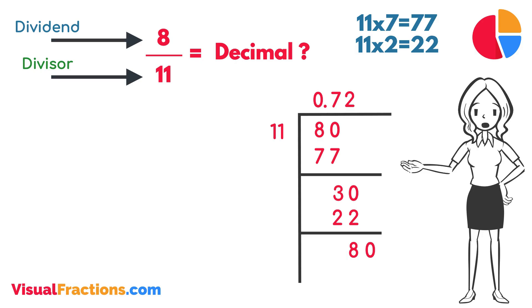Adding another 0 gives us 80. How many times does 11 go into 80? Again, 7 times. We add this 7 to our quotient, resulting in 0.727. After subtracting 77 from 80, we're left with 3 as a remainder, indicating the start of a repeating cycle.